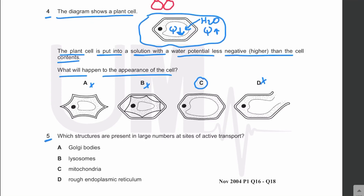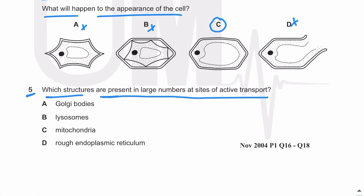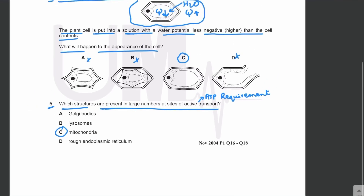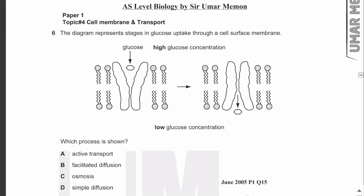MCQ number five: which structures are present in large numbers at sites of active transport? For active transport the cell requires ATP, and near the sites of active transport there are large numbers of mitochondria to provide that ATP. The answer is B. Let's move on to MCQ number six.